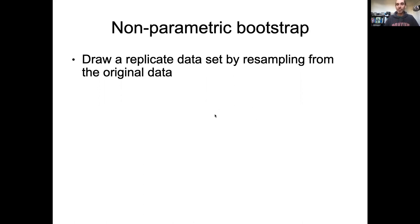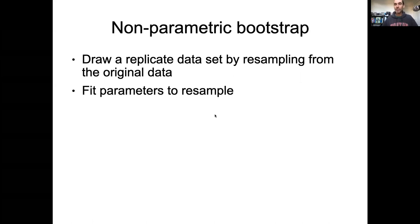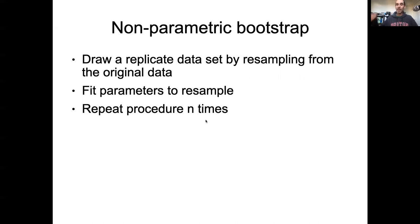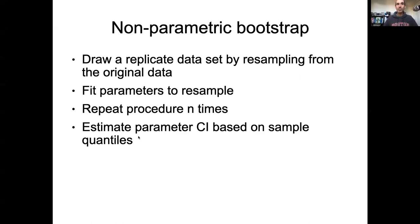Here's the algorithm, and it's important to understand these steps. First, draw a replicate sample of the data by resampling the original data. Next, fit your parameters to that resample using maximum likelihood or whatever method you use. Repeat this procedure n times: draw a replicate, fit parameters, save the estimate. Then use these n samples of estimated parameters to estimate confidence intervals based on sample quantiles, standard error based on sample standard deviation, and so on.